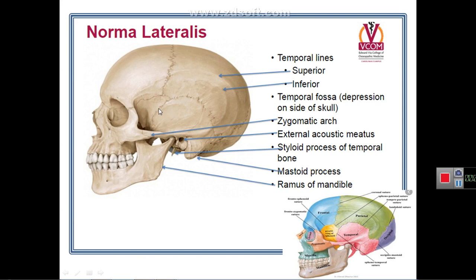The zygomatic process of the temporal bone forming the arch is sometimes called the zygoma, and deep to it is a space connecting the temporal fossa with the infratemporal fossa below. The infratemporal fossa is the cavity deep to and behind the ramus of the mandible, connected to the temporal fossa through the gap deep to the zygomatic arch.